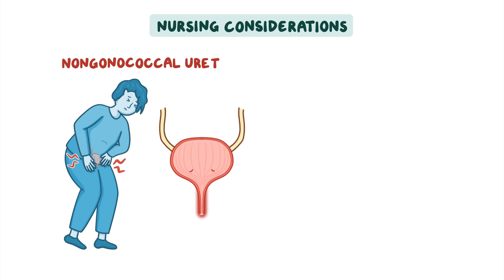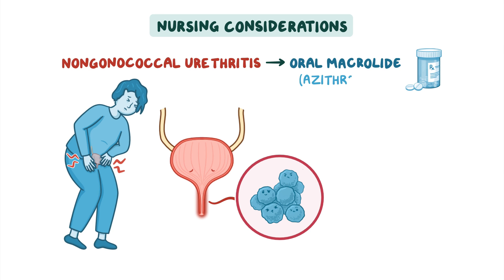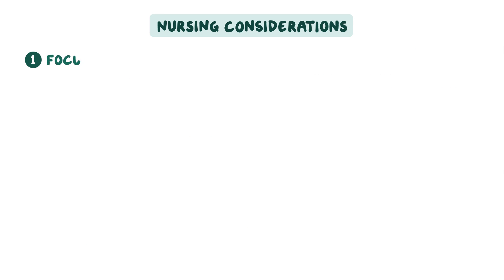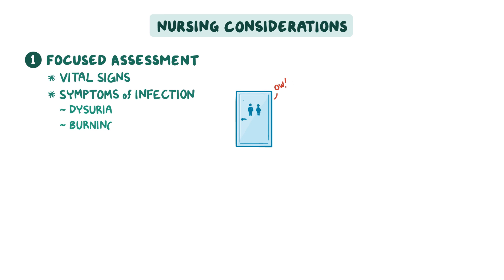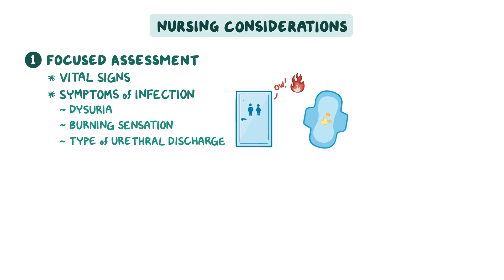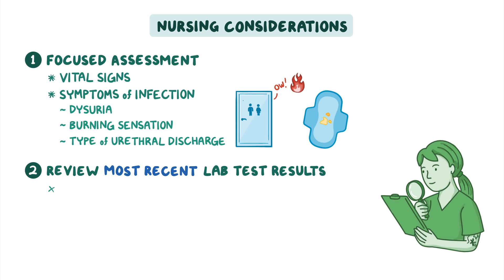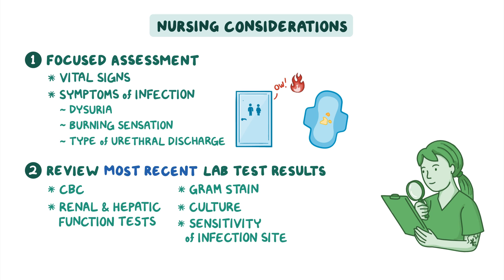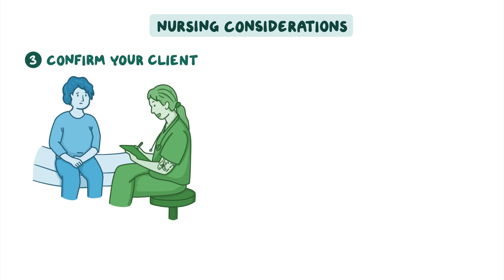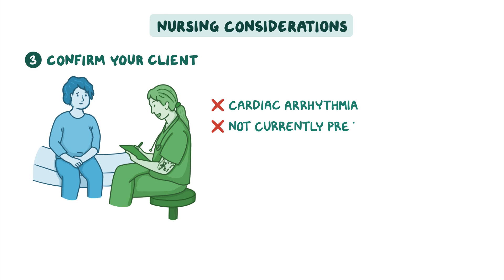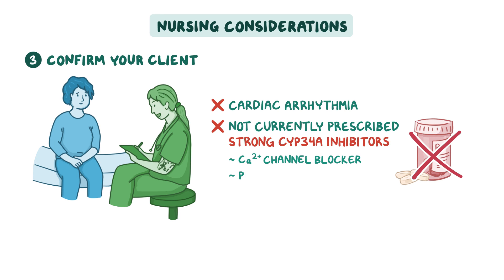When caring for a client with non-gonococcal urethritis who's been prescribed an oral macrolide like azithromycin, first perform a focused assessment including vital signs and noting symptoms of infection such as dysuria, burning sensation, and type of urethral discharge. Review their most recent laboratory test results including CBC, renal and hepatic function tests, gram stain, culture and sensitivity of the infection site, and nucleic acid amplification test, or NAAT. Lastly, confirm that your client does not have a known cardiac arrhythmia and is not currently prescribed any medications that are strong CYP3A4 inhibitors, such as a calcium channel blocker or protease inhibitor.